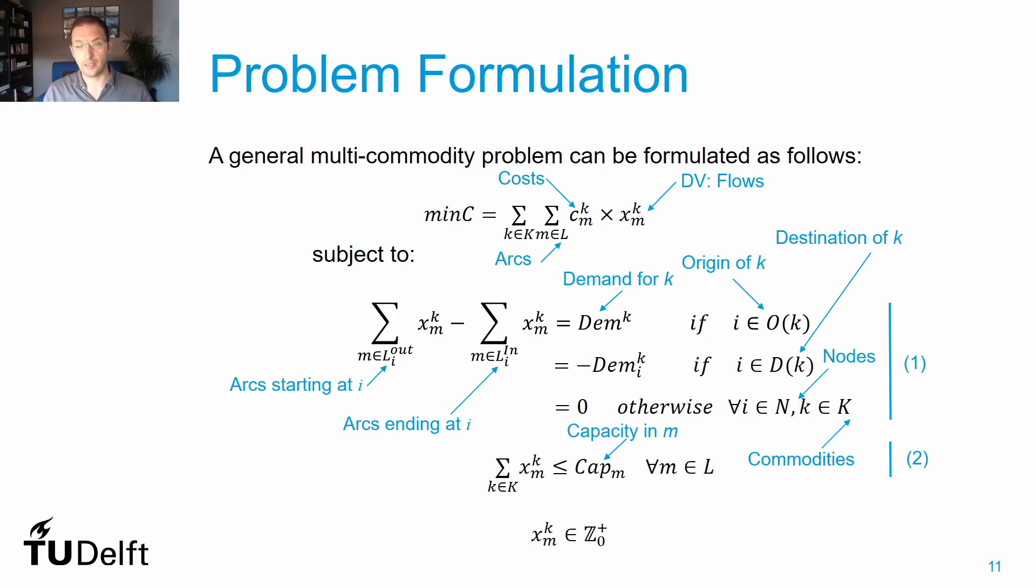In the second set of constraints, I relate flows using that arc with the capacity per arc for all arcs in the network. I sum over all commodities the flows using that specific arc m, and this sum of flows has to be lower than the parameter capacity_m, which is the capacity of arc m.